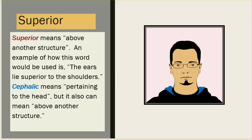Superior means above another structure. Example: the ears lie superior to the shoulders. Cephalic means pertaining to the head, but it can also mean above another structure.